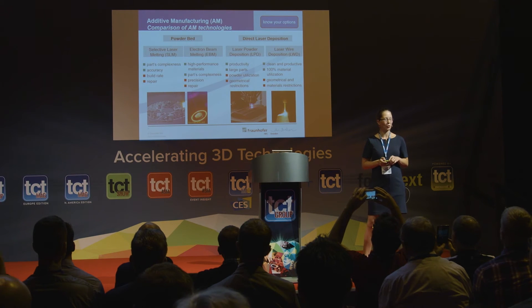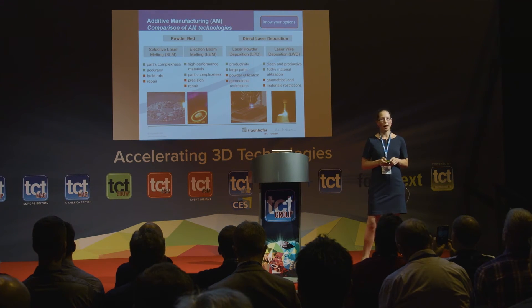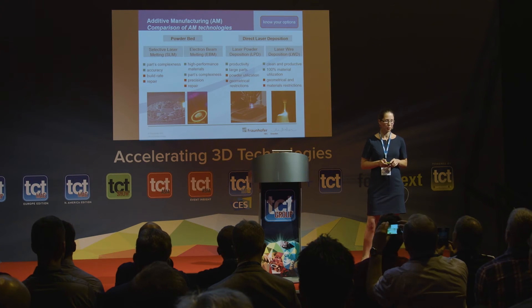To summarize the pros and cons: selective laser melting gives the best accuracy and the highest part complexity compared to other processes. Electron beam melting has a higher build rate and can process high-performance materials because you work under a vacuum atmosphere, but it lacks precision and is not very suitable for repairs. Direct laser deposition — laser powder or laser wire deposition — gives higher productivity and can produce larger parts, but has some geometrical restrictions, so part complexity is not as good as powder bed processes.